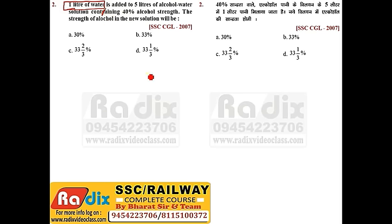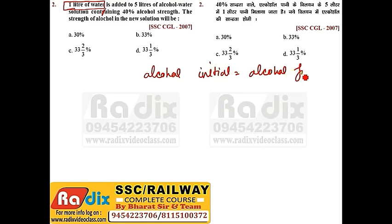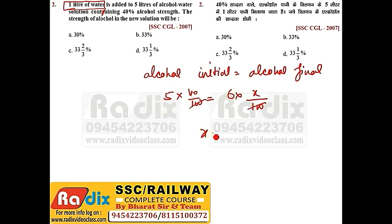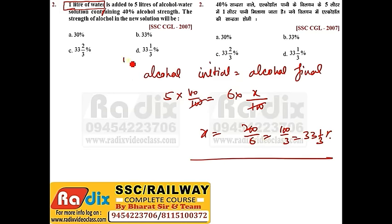If we add water, alcohol will remain the same. So alcohol initial equals alcohol final. Initial: 5 liters at 40% alcohol. We have added 1 liter, so in 6 liters the alcohol is x percent. Solving: x = (5 × 40) / 6 = 200/6 = 100/3 = 33 and 1/3 percent. Answer is option D.